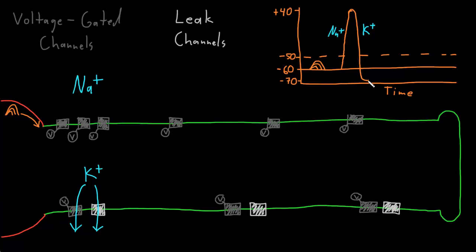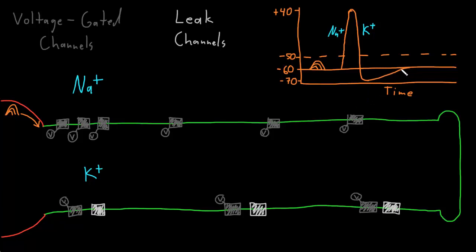The action potential stops falling because now it's more negative inside the neuron again, so there's less driving force pushing potassium out through the leak channels. Also, the voltage-gated potassium channels automatically close at lower potential values, just like the voltage-gated sodium channels automatically closed. But the voltage-gated potassium channels are a little slower to close, so it takes a little longer for the exit of potassium to stop. That's why there's a slightly longer period at the end of the action potential before we slowly settle back into the resting membrane potential, as these channels close and membrane permeability to potassium returns to normal.